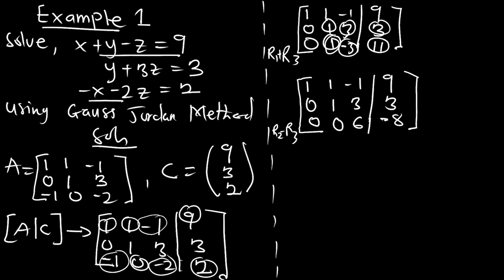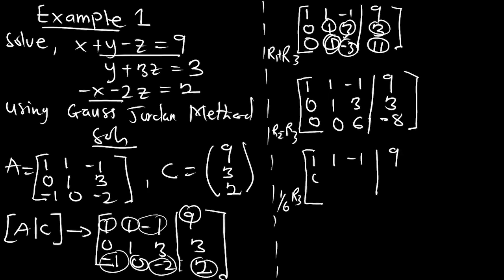Since there has to be 1 on the principal diagonal, I want to multiply row 3 by 1/6 so that I convert the leading element to 1. Row 1 stays: 1, 1, -1 | 9. Row 2 stays: 0, 1, 3 | 3. Row 3 becomes (1/6)×R3: 0, 0, 1 | and -8/6 which simplifies to negative 4/3.